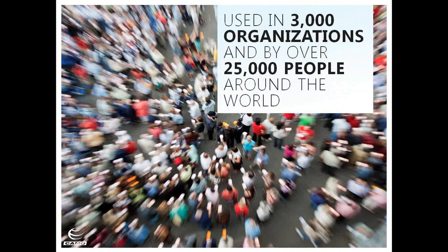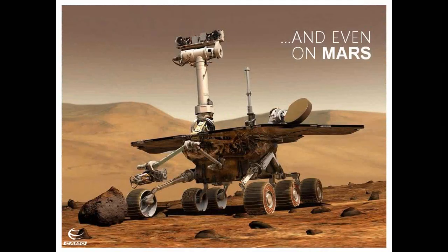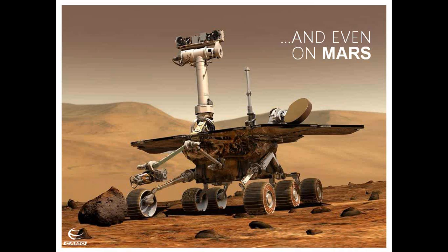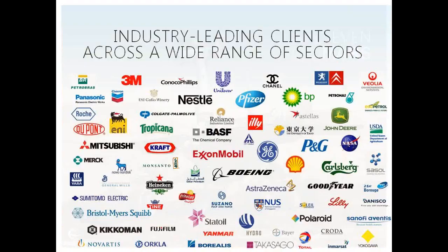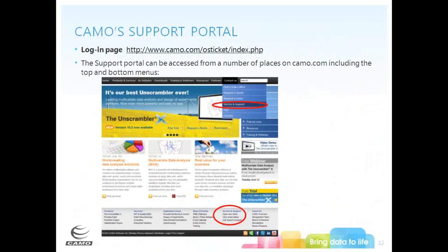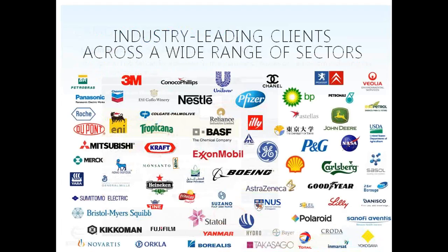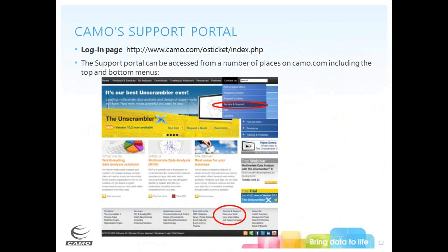The Unscrambler is used in over 3,000 organizations globally by over 25,000 people. It's even used on Mars, where Unscrambler models are used in conjunction with analytical instrumentation to help classify rock samples collected by the rover Curiosity. Beyond NASA, we have many other clients covering many different sectors. We also have a global support portal on our website, manned 24 hours a day, for rapid responses to service requests.